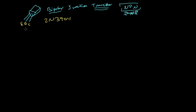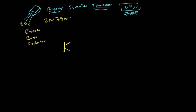The three leads are the emitter, base, and collector. Looking at the circuit schematic for this transistor, it's usually drawn like this, with a little arrow on it and three leads coming off. Sometimes you'll see it drawn with a circle around it, sometimes not — that's just a matter of preference. This lead over here is the base, this one up here is the collector, and this one down here is the emitter. This is the circuit diagram for an NPN transistor.